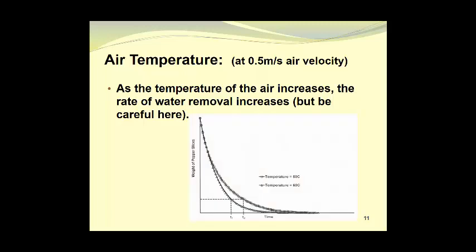In this graph, we see the weight of pepper slices when they are dried at 50 degrees Celsius and 60 degrees Celsius. As you can see from the dashed line, it takes less time for the drying at 60 degrees Celsius to produce a given weight of dried product than it does for air at 50 degrees Celsius. They are shown as T1 for the 60 degrees Celsius air and T2 for the 50 degrees Celsius air.